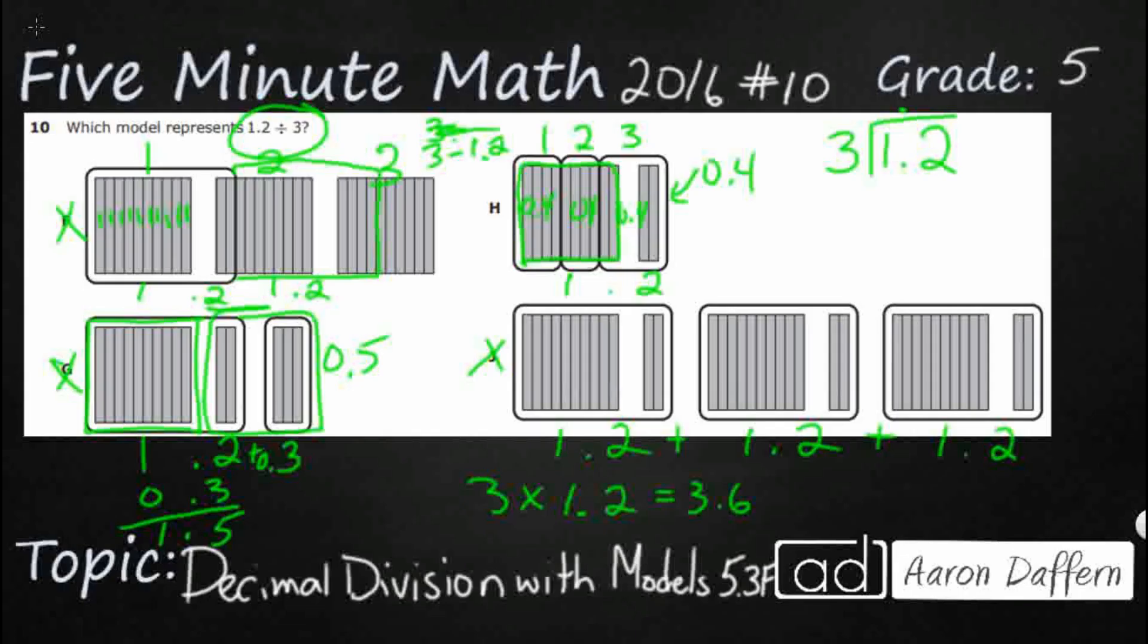if you have a decimal in the divisor, you've got to do something a little bit different, but we're not dealing with that here. We can't divide with the decimal in the divisor—we have to move decimals. But in this case, our divisor is just a whole number.